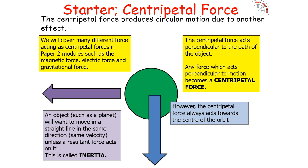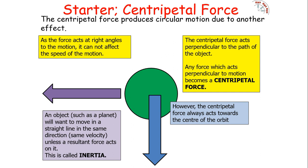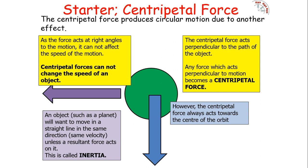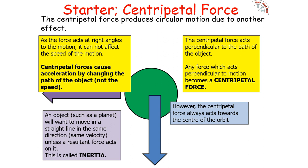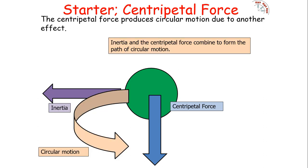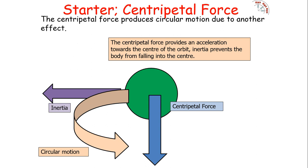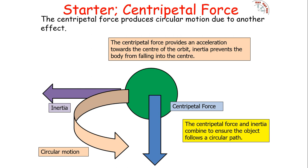Because the centripetal force acts at right angles to motion, it cannot affect the speed of the object. This means centripetal forces cannot change the speed of an object, but they can change its direction. So a centripetal resultant force causes acceleration not by changing the speed of the object, but rather by changing the path — what we call acceleration via deflection. The inertia and the centripetal force combine to form the path of the circular motion: centripetal force provides acceleration towards the centre, while inertia wants the object to continue in a straight line at the same speed, preventing the body from falling into the centre.